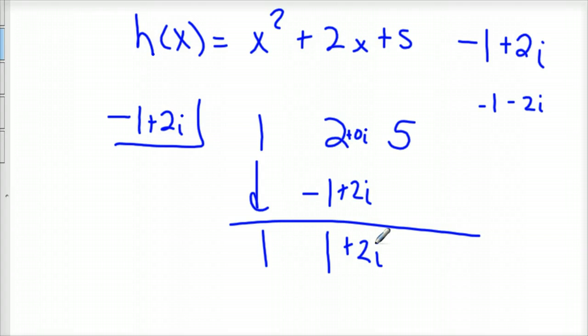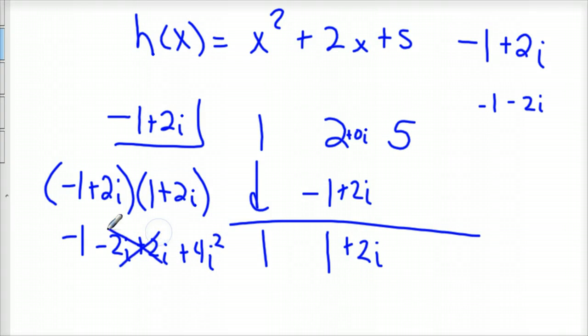Then we have to multiply these two together. So hopefully you know how to multiply complex numbers. And you multiply those and you get negative 1 minus 2i plus 2i plus 4i squared. Well these two cross out and you have negative 1 minus 4 because i squared is negative 1. Negative 1 minus 4 is negative 5. That goes here and you get 0. Thank goodness.